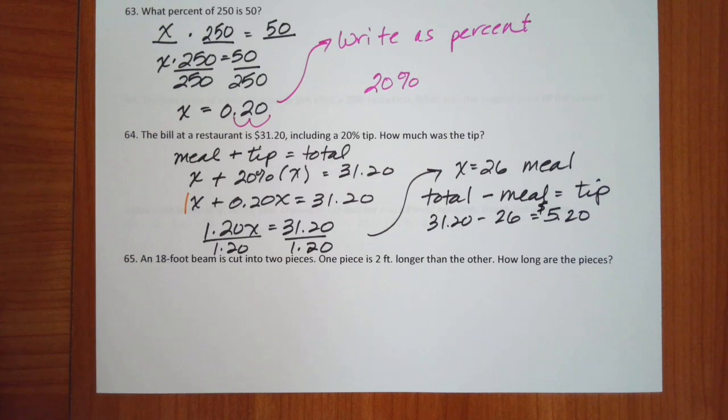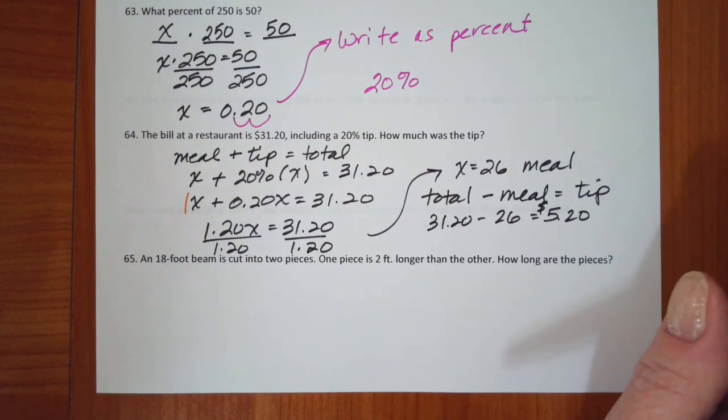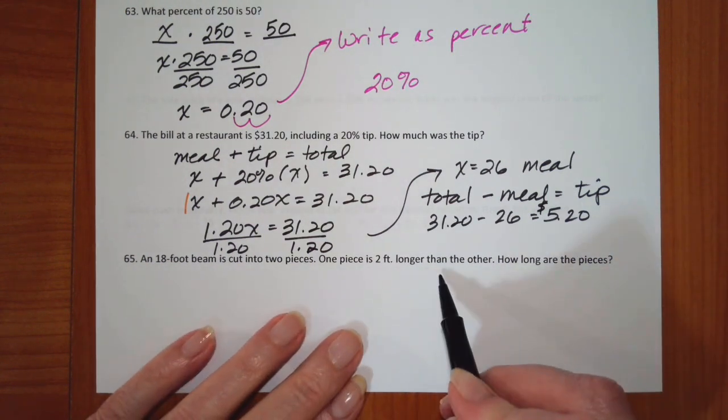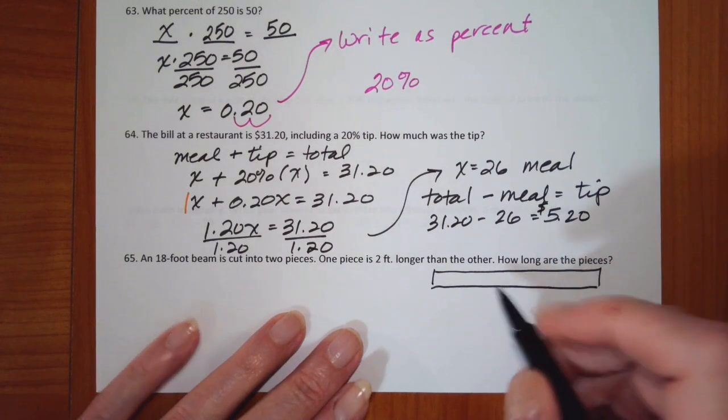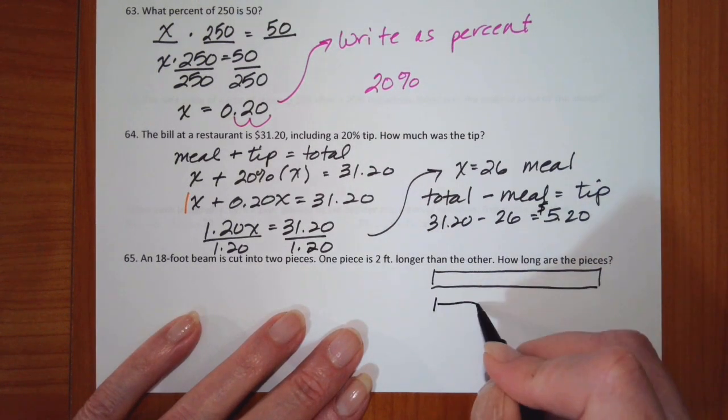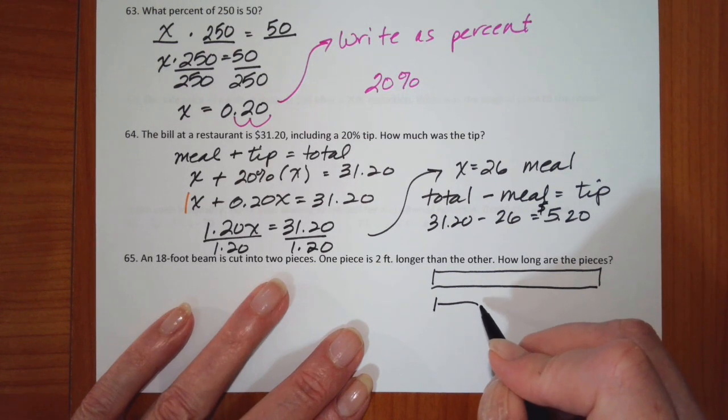All right. So an 18-foot beam is cut into two pieces. One piece is two feet longer than the other. How long are the pieces? Okay. So here's my beam. And I know from the whole thing is 18 feet.